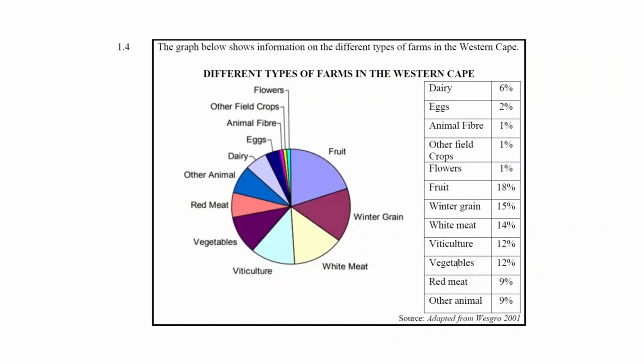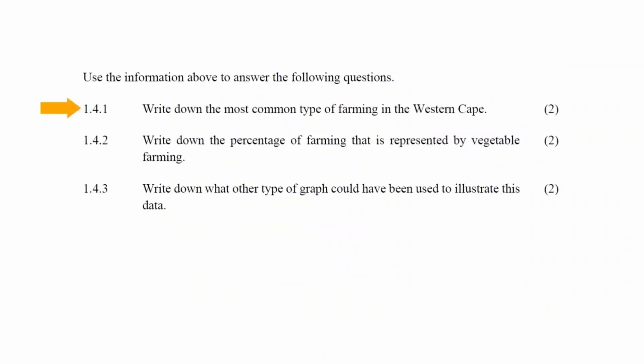You are given a pie chart of the different types of farms in the Western Cape. You are also given a table with the different types of farms and their respective agricultural share in percentages. In question 141, you have to write down the most common type of farming in the Western Cape.